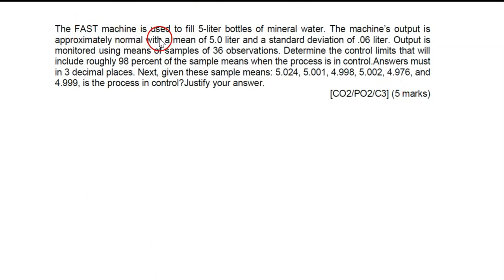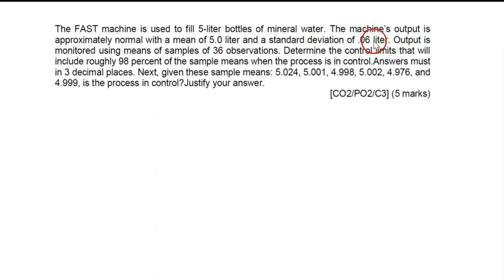This is a 5-mark question. Usually for 5-mark questions there is no graph to draw. It's about a machine filling water. The information given: a mean of 5 liters, standard deviation (sigma) of 0.06 liters, and number of samples n=36. Determine the control limit that will include 98% confident interval. Answer must be in 3 decimal places.